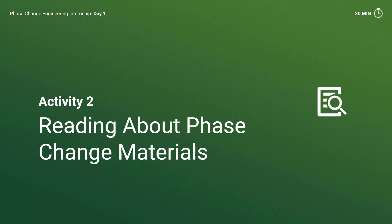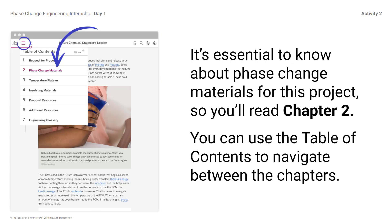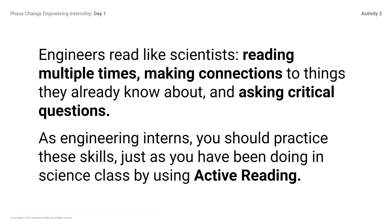Activity 2: Reading about phase change materials. You will begin your research on phase change materials by reading part of the Futura Chemical Engineers dossier. A dossier is a term professionals use for a set of related documents including all project details. It includes the background information and references you need to complete your internship, accessible through the link in the Welcome to Futura message, or directly in the Amplify library or lesson brief. It is essential to know about phase change materials for this project, so you'll read Chapter 2. Engineers read like scientists — reading multiple times, making connections to things they already know, and asking critical questions. As engineering interns, you should practice these active reading skills just as you have been doing in science class.